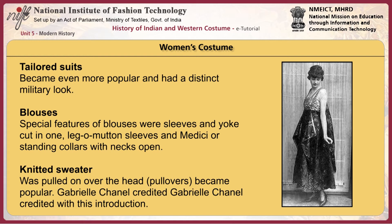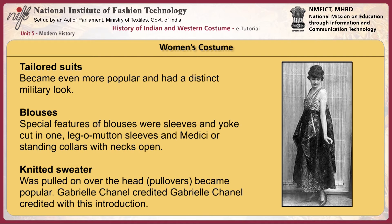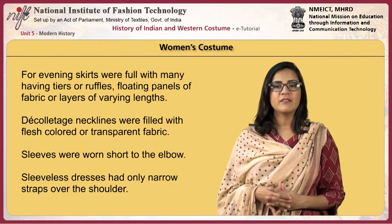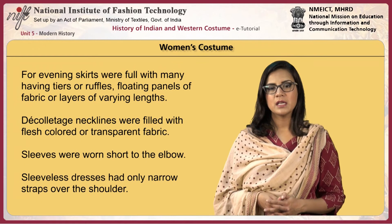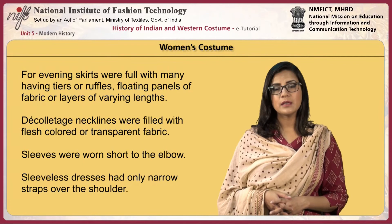Tailored suits became even more popular and had a distinct military look. Special features of blouses were sleeves and yoke cut in one, leg-o-mutton sleeves, and Medici or standing collars with necks open. Knitted sweaters that pulled on over the head, or pullovers, became popular — Gabrielle Chanel is credited with this introduction. For evening, skirts were full with many having tiers or ruffles, floating panels of fabric, or layers of varying lengths. Decolletage necklines were filled with flesh-colored or transparent fabric. Sleeves were worn short to the elbow, and sleeveless dresses had only narrow straps over the shoulder.